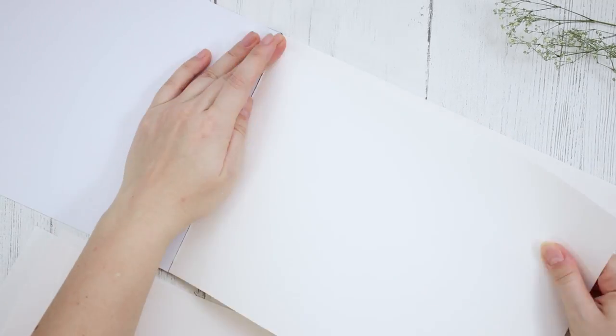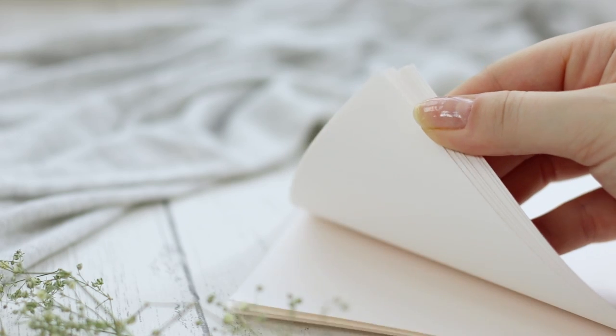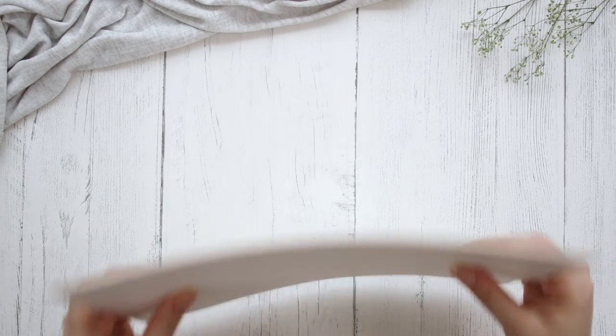Print the dot grid on both sides of as many pages as you want to use. I used about 10 sheets per insert which is going to give you a 40 page notebook.